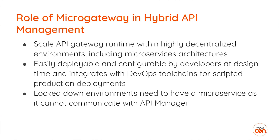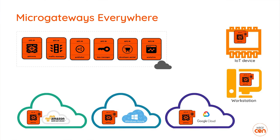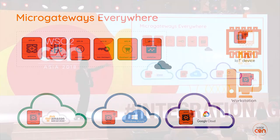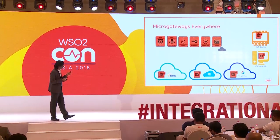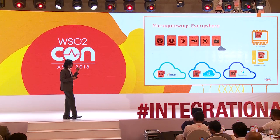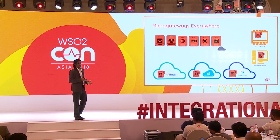Each time when you deploy regional gateways, you can think about whether you need micro-gateways or a traditional API gateway. With this approach you can deploy micro-gateways anywhere you need — you can have your central API management solution and if you have a specific requirement to run your gateway on an IoT device, on your workstation, or on any cloud, you can just get a copy of the gateway and deploy it wherever you need.